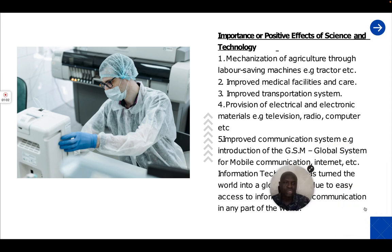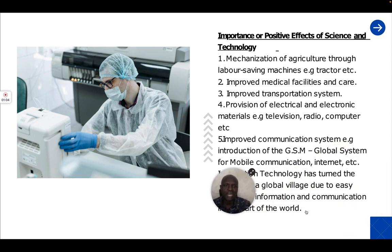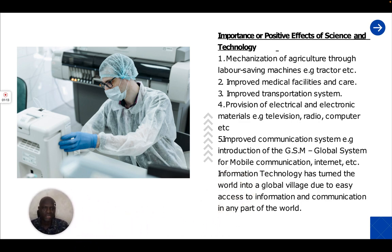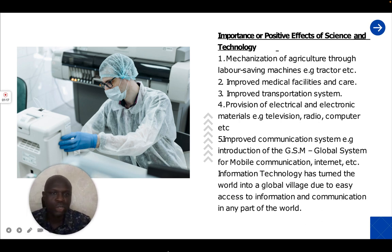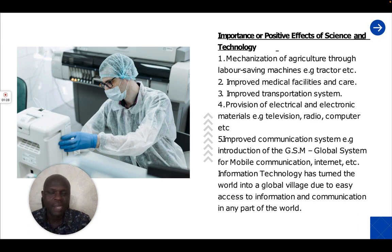Number one, it is through science and technology that we have mechanization of agriculture through labor-saving machines. For example, in those days, they made use of crude tools to produce things. But today, we have been able to make use of mechanized ways by introducing tractors to operate on the farmland.